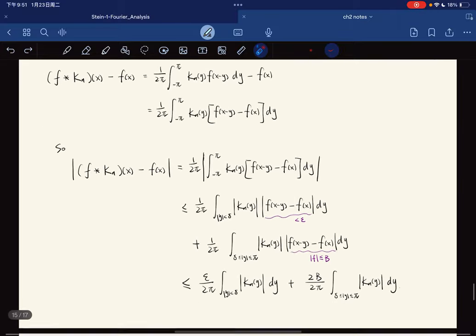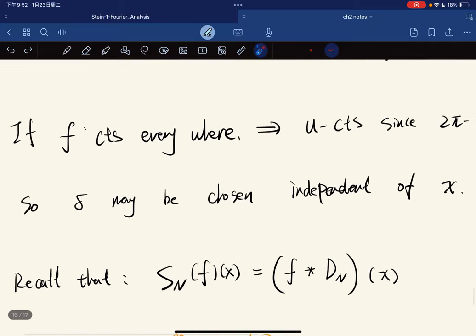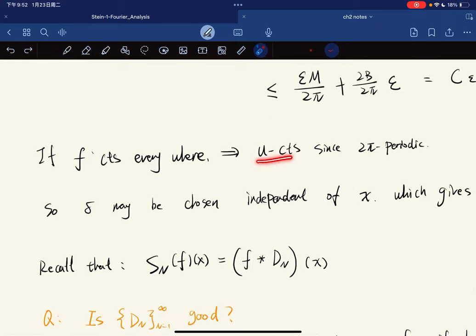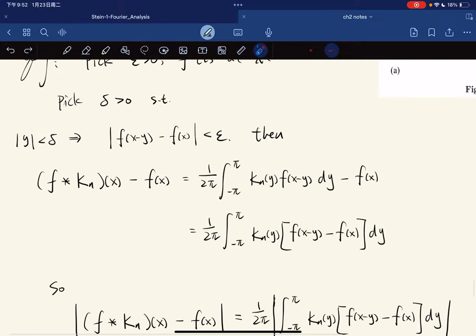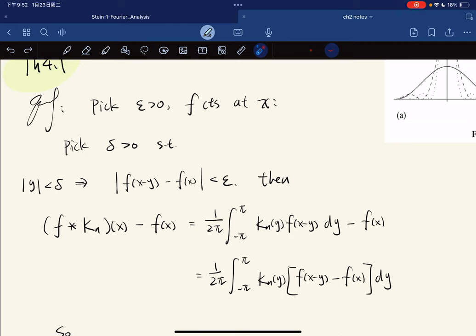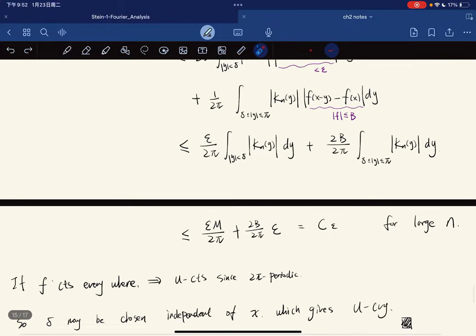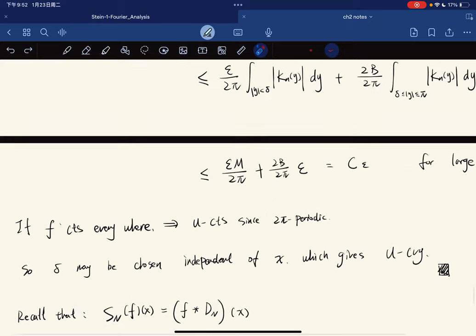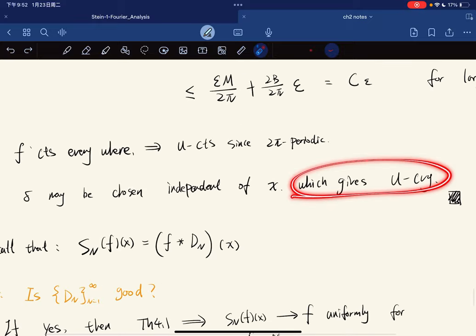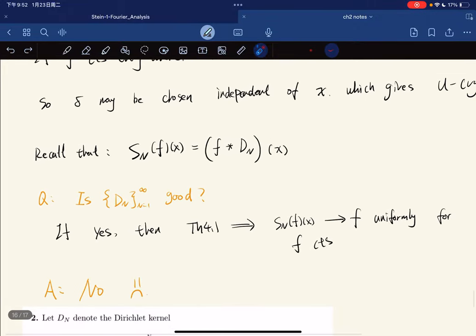So we have convergence at each x. Now if f is continuous everywhere, then it is uniformly continuous since it's 2π periodic. If it's continuous everywhere, you're continuous on a compact set, then you're uniformly continuous. So delta may be chosen independent of x. This holds for any x, which means uniform convergence. This proves our result.